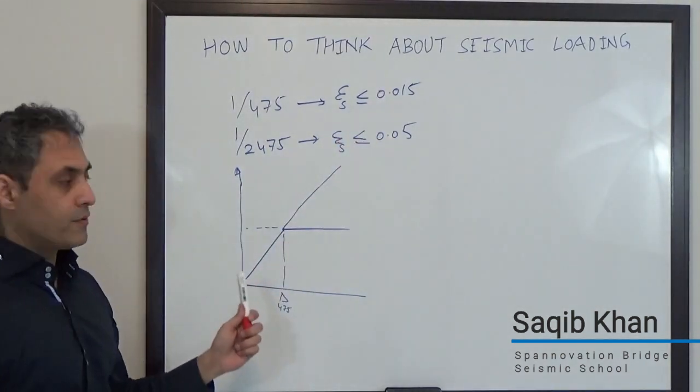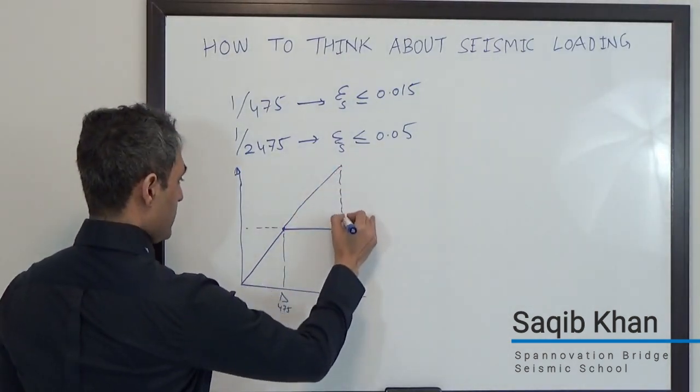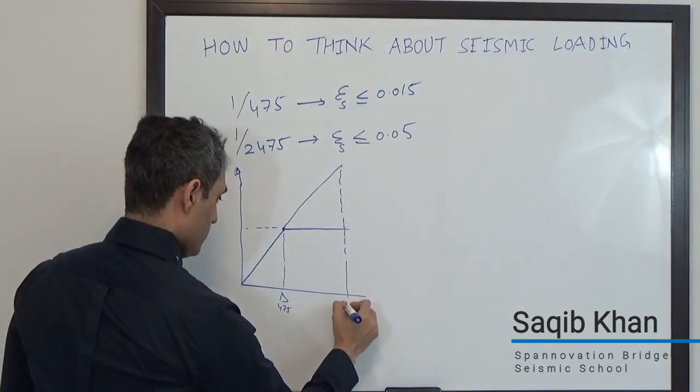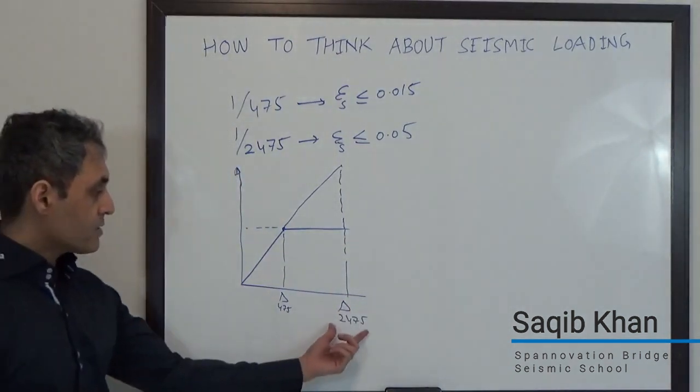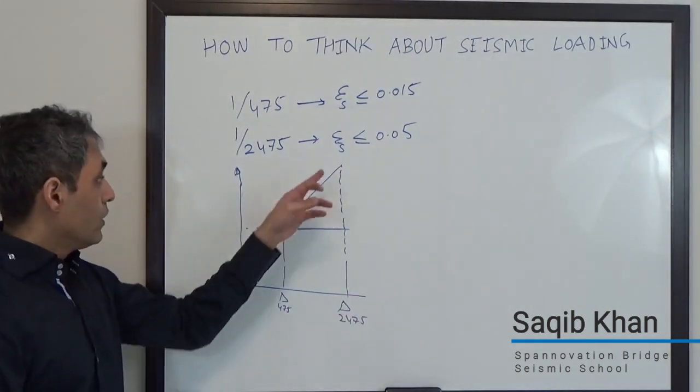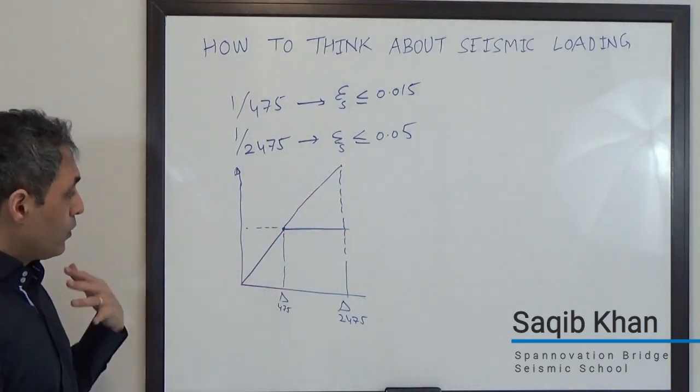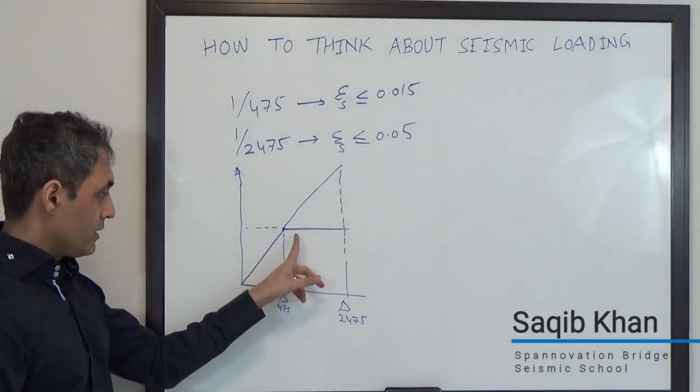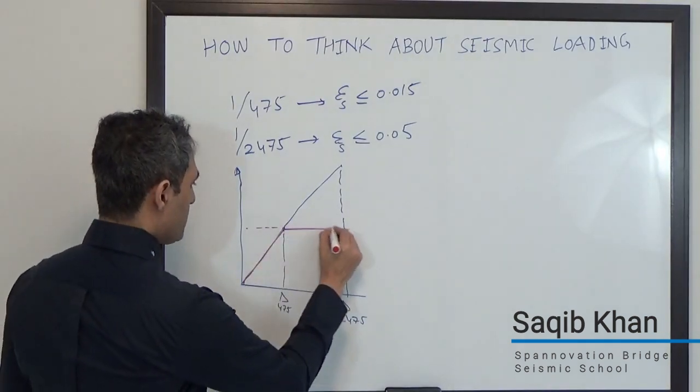In a 1 in 2475-year event, let's say my displacement demand goes there. That's the demand, the displacement demand that the earthquake is going to push your system to, whether it's elastic or elastoplastic.